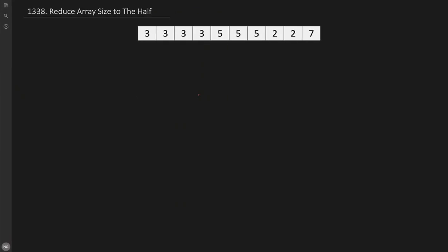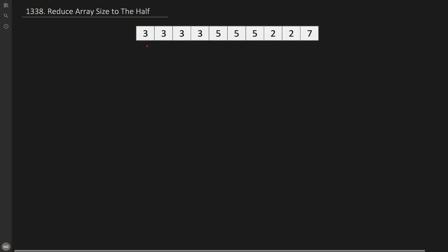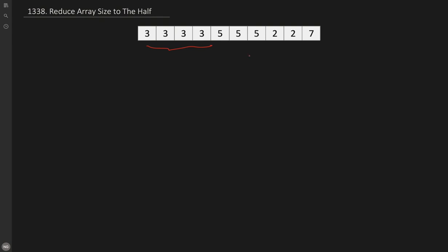Let's understand this problem with the example given in the problem itself. We need to select numbers such that the selection is minimum, and we can remove all occurrences of those selected numbers. For example, if I select 3 first, I can remove all 4 occurrences of 3. The total length of the input array is 10, so we still need to remove more. We can then select 5. Once we remove all occurrences of 3 and 5, we've greedily selected 3 and 5.